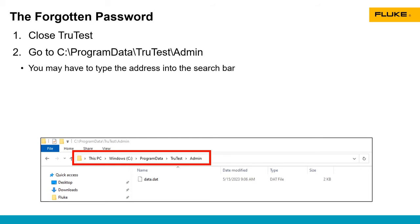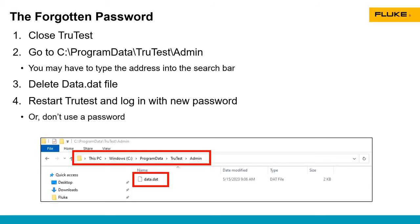A lot of times you can't see that program data folder unless you have high-level administration rights to your computer. Once you get into that folder, the only thing in there is the data.dat file. Delete that file and then restart TrueTest — it's going to ask you to log in again with a new password. You don't actually need to use a password in TrueTest, so you can just put in your username and hit log in.